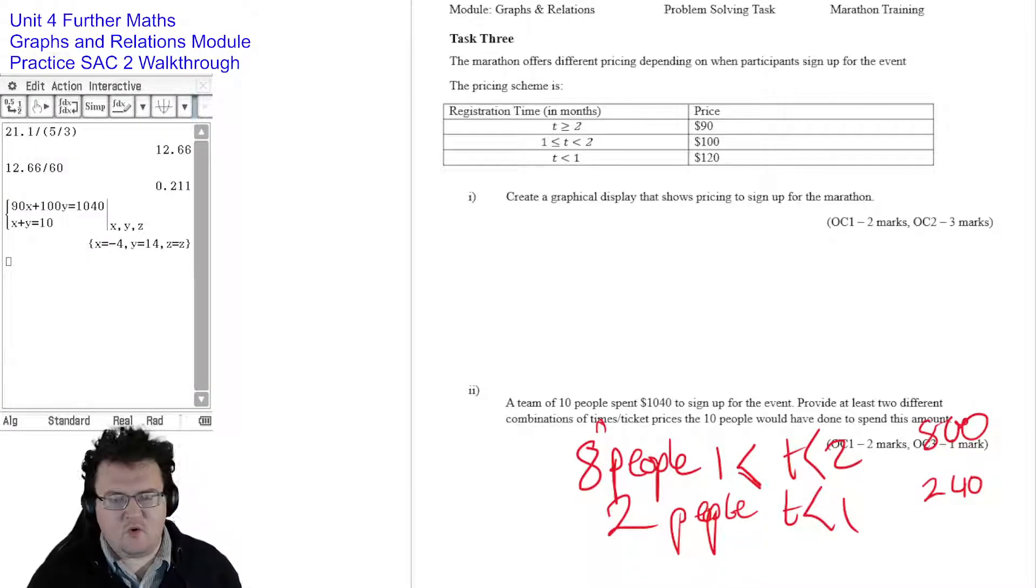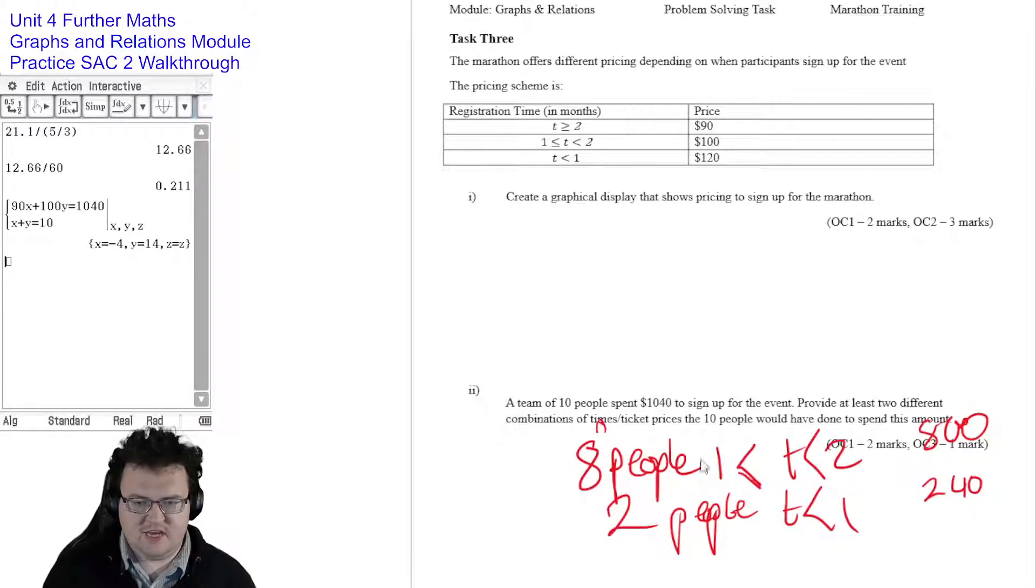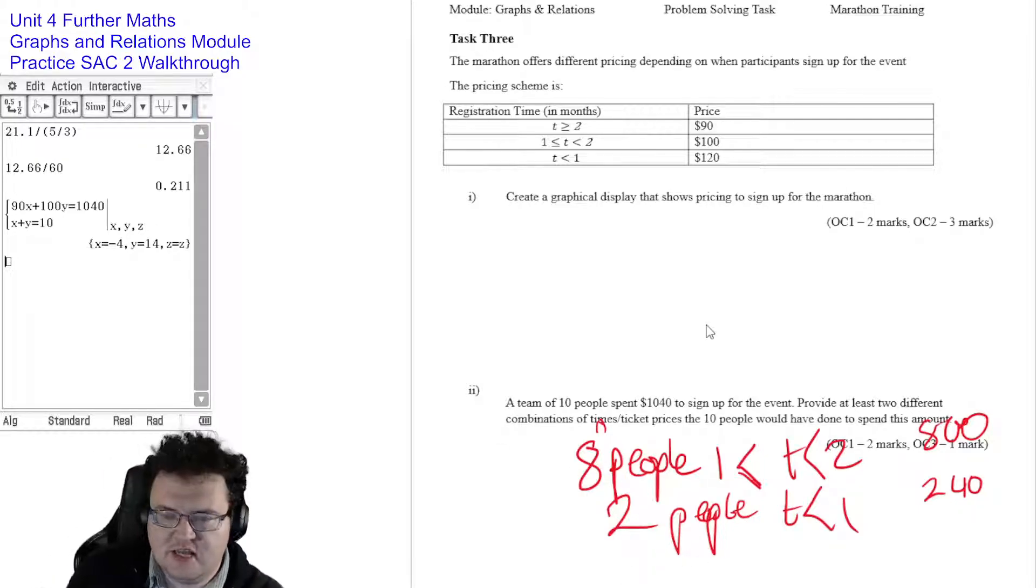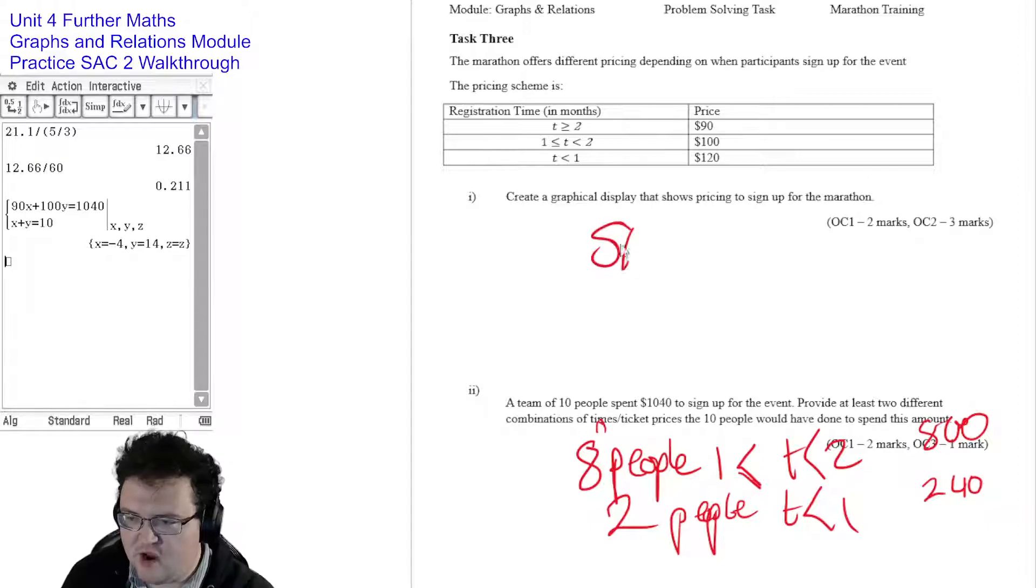G'day and welcome to part three of my walkthrough of the 2019 SAC. I just jumped ahead and done some scribbling on that one there because that question has a problem with it. But this question here, create a graphical display that shows the pricing to show up for the marathon. This is a step graph.